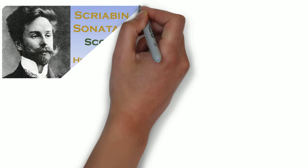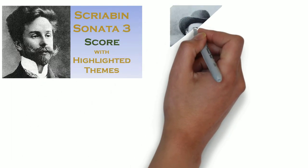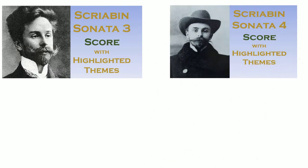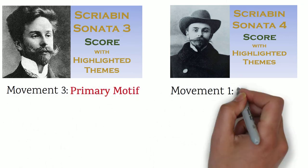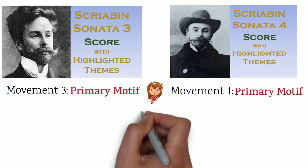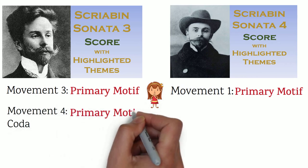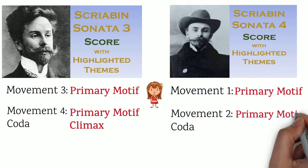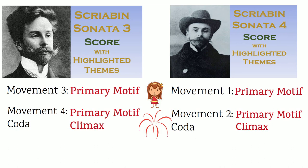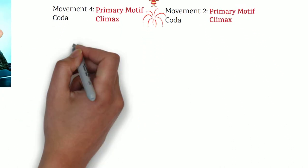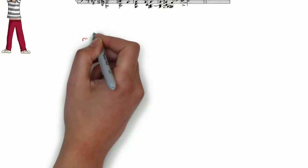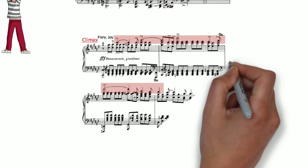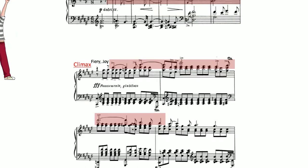Let's explore how Scriabin implements climaxes throughout his larger works. In Sonatas 3 and 4, Scriabin introduces the primary motif in one movement very softly, begins the Sonata form in the next movement, and brings the primary motif to a climax by the very end in the coda. Let's listen to Sonata 4's primary motif in movement 1 before we listen to the same primary motif brought to a climax at the end of movement 2.